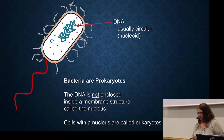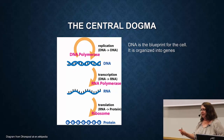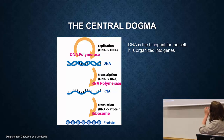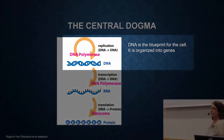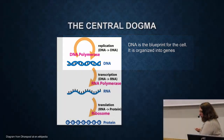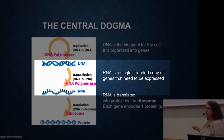These bacteria are prokaryotes. Now I'll give you a 30-second explanation of DNA, and there will be extra links if you don't already know this. DNA is the blueprint for the cell — it's organized in genes. Genes are transcribed into RNA, which is a single-stranded copy of the genes that need to be expressed.